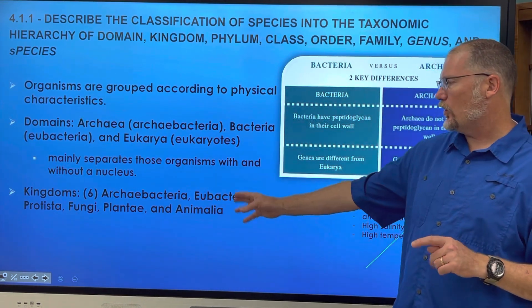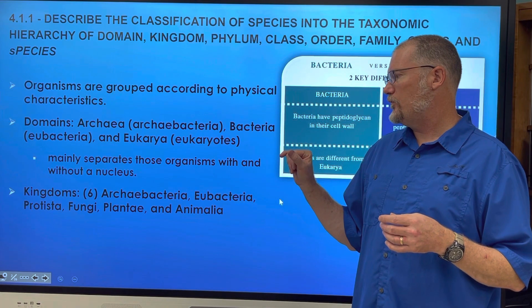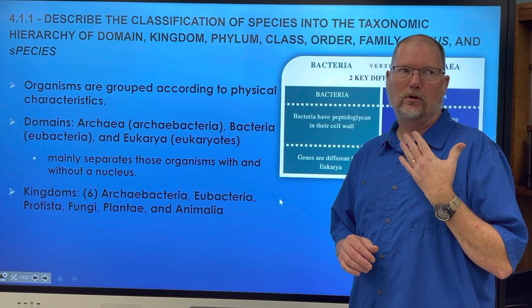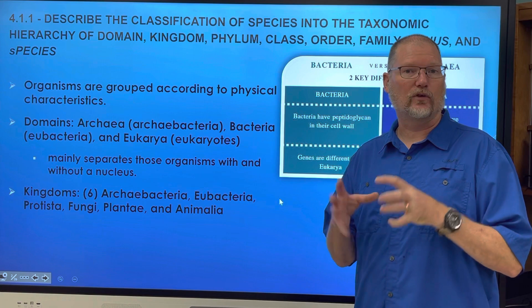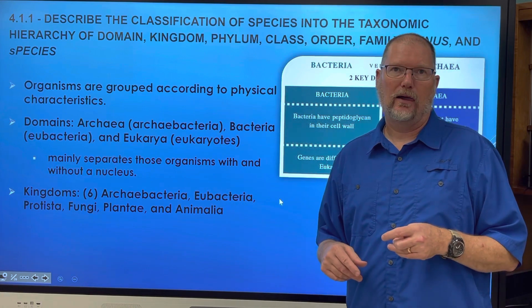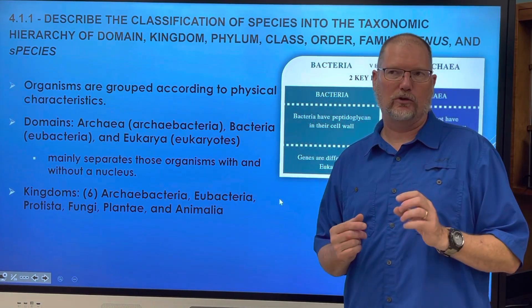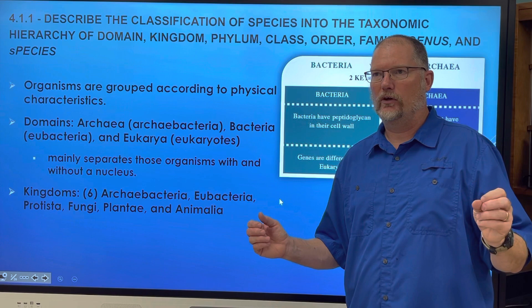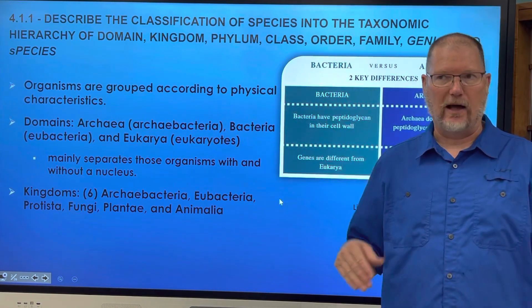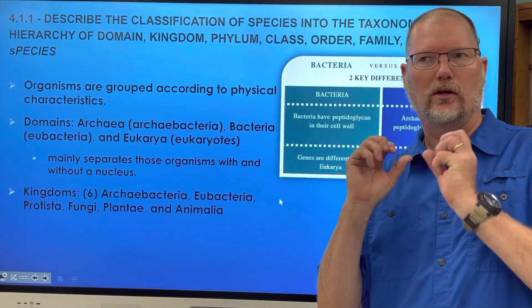The kingdoms — there are six of them: archaea bacteria, eubacteria, protista, fungi, and then we get into plantae and animalia, which are all the fish, sponges, crabs, whales, and all those things. We're going to move our way up through that. You might remember some of this from biology class, but we're going to focus solely on the marine environment.